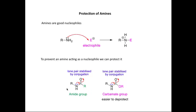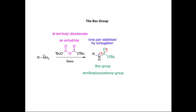So what we need is a protecting group that stabilizes the lone pair on nitrogen but is also easy to deprotect, and that's what we have with the carbamate functional group. In a carbamate, just as for amides, we can delocalize the lone pair onto the oxygen. But the advantage of using carbamates is that they are easier to deprotect than amide groups, so they are more commonly used as protecting groups in synthesis.